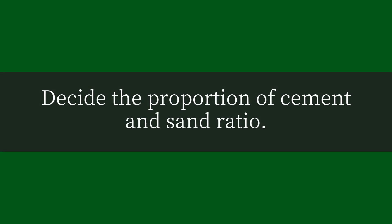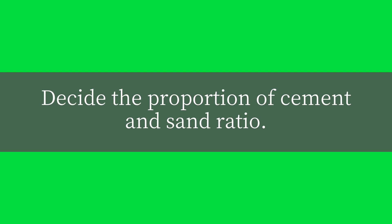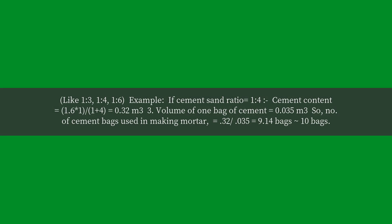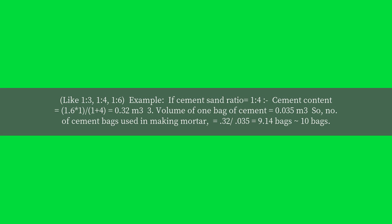Next, decide the proportion of the cement and sand ratio, such as 1:3, 1:4, or 1:6. For this example, we use a cement-sand ratio of 1:4.